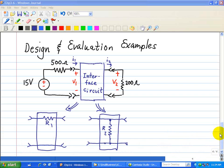Here we have a design and evaluation example, and we're asked to design two versions of the interface circuit, shown here and here, that delivers 5 volts to V2, to the 200 ohm load.